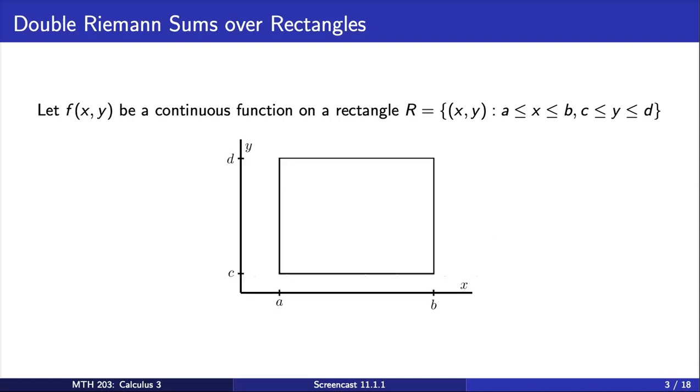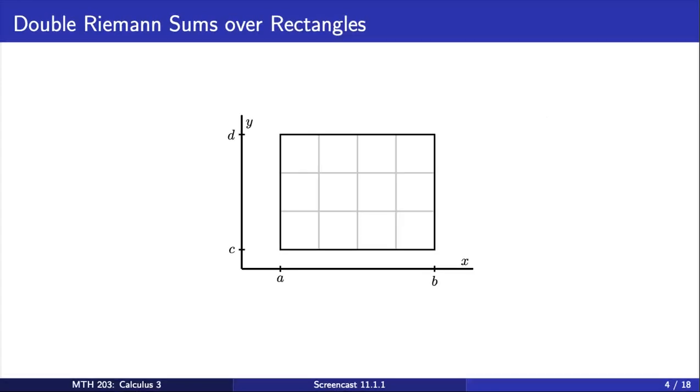Here's a picture of what R could look like in the xy-plane. Next, we do a similar thing as what we did in single variable calculus. We are going to partition the intervals from a to b and from c to d into sub-intervals. Using those sub-intervals, we create a partition of the rectangle R into sub-rectangles as shown here with the gray lines.